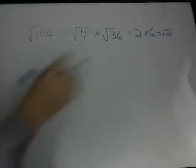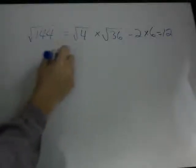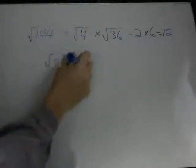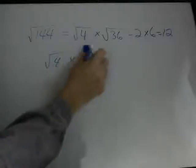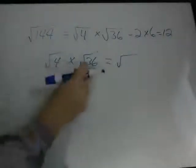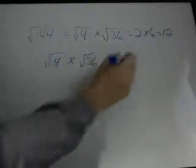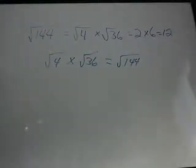One of the key components here is working backwards — breaking a number down into two factors whose square roots we know. So if you're given the square root of 4 times the square root of 36, you can combine these: 4 times 36, and the answer is the square root of 144, which is 12.